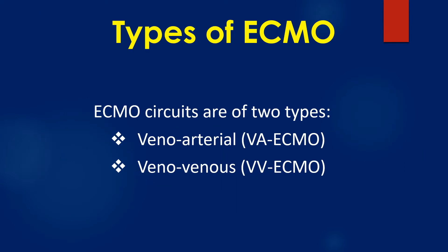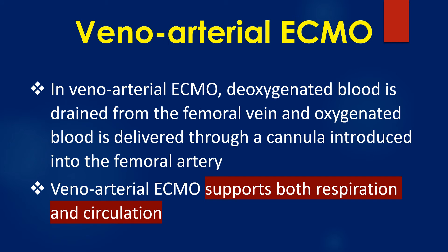ECMO circuits are of two types: Veno-arterial or VA ECMO, and Veno-venous or VV ECMO. In Veno-arterial ECMO, deoxygenated blood is drained from the femoral vein and oxygenated blood is delivered through a cannula introduced into the femoral artery. Veno-arterial ECMO supports both respiration and circulation.